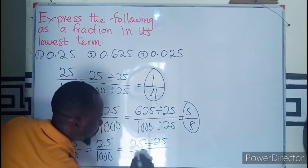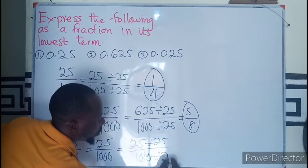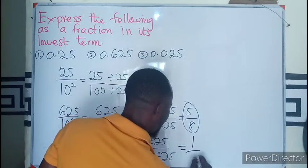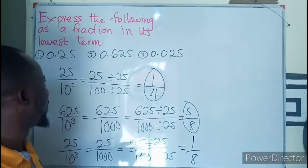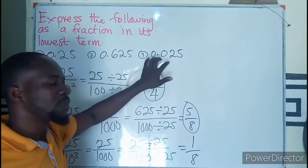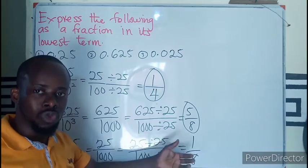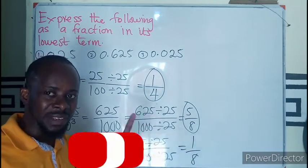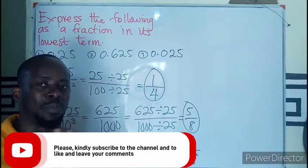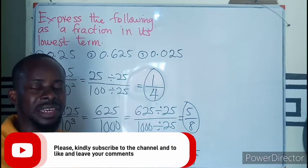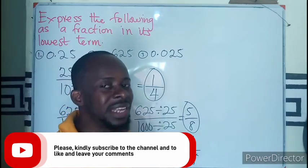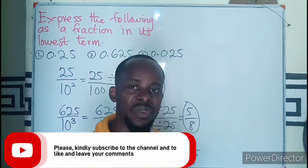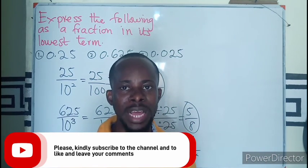We look for a common factor, which in this case is still 25. So 25 divided by 25 gives 1, and 1000 divided by 25 gives 40. So the answer is 1 over 40. In summary, when converting from a decimal fraction to a proper or common fraction: one, identify the decimal places; two, let that number of decimal places become the exponent of 10; three, divide the whole number by that power of 10; then find the equivalent fraction in lowest terms.